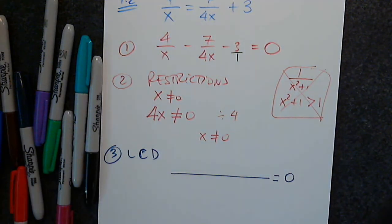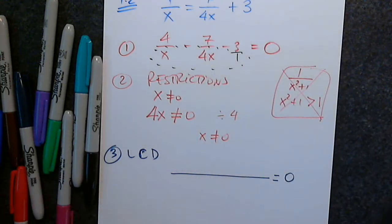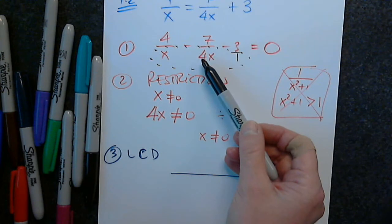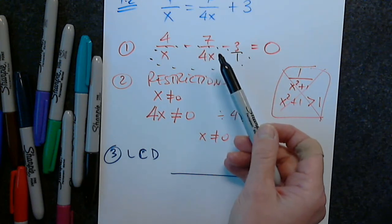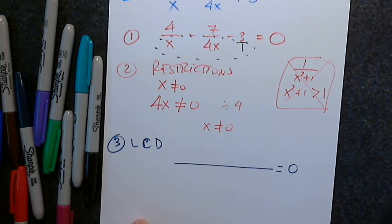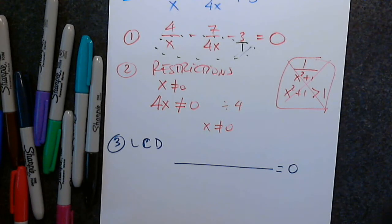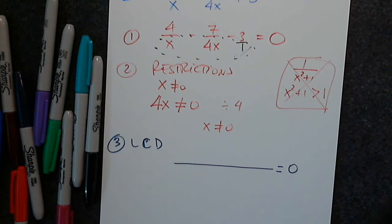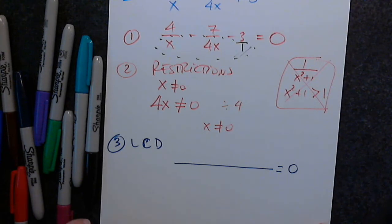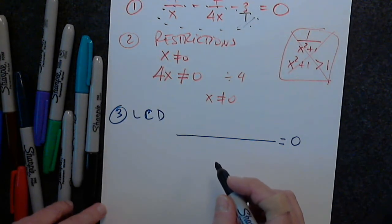So how many different factors do we see here? 1, 4, and x. So what is the least common denominator? We do not consider 1 as a factor. So when I say how many different factors, you cannot say x twice. The LCD is 4x.